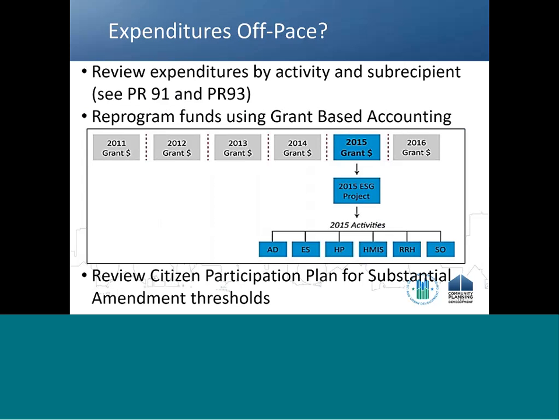Also use the PR-93 report to identify areas of slow spending. The report will flag the recipient's grant if there have not been any draws made against the grant in IDIS in the past 90 days. ESG recipients must reimburse their subrecipients within 30 days and draw funds in IDIS at least quarterly. At this midpoint review, recipients can see if the PR-93 report has flagged the specific grant as being less than 50% drawn at one year from the recipient's obligation date. Watch the Using IDIS for Financial Management webinar for a closer look at the PR-91 and PR-93 reports.